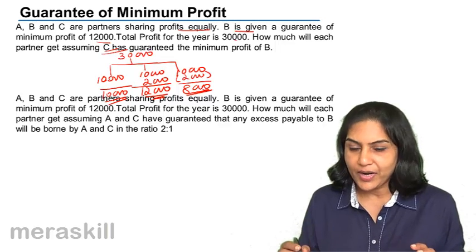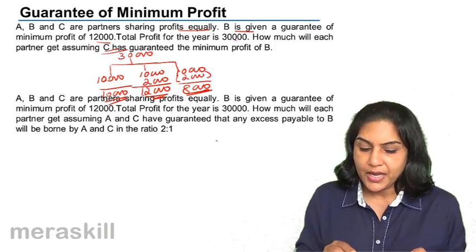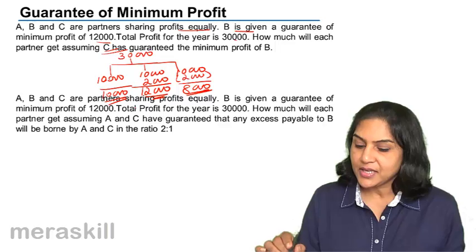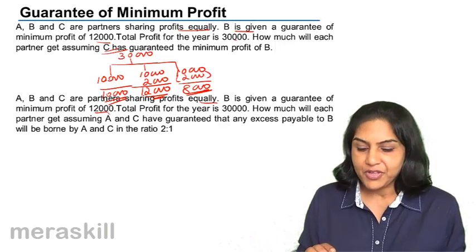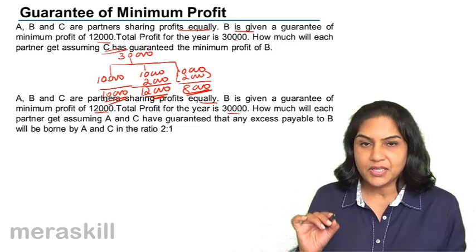Let us see one more variation. A, B and C partners equal. B is given guarantee of 12,000. Total profit 30,000.